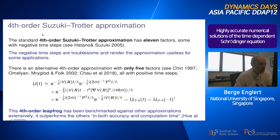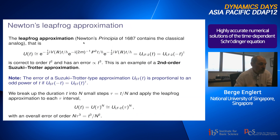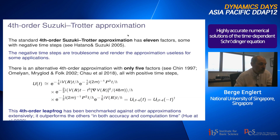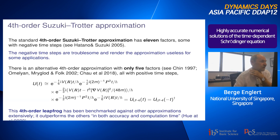Looking at the standard literature — particularly an article by Hatano and Suzuki from 2005 — there is a fourth-order Suzuki-Trotter approximation with 11 factors, meaning a lot of switching back and forth between position and momentum representations. What is really problematic about this factorization is that some of the time steps are negative — they go back in time. There are applications that simply cannot tolerate time steps with the wrong sign, making this approximation useless for some use cases.